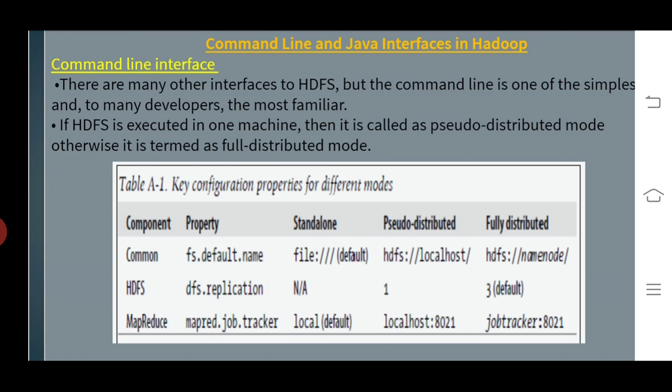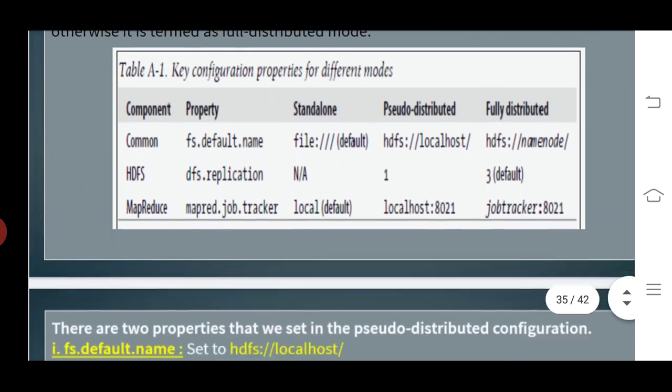Coming to basic file system operations — the system is ready to be used and we can do all of the usual file system operations, such as reading files, creating directories, moving files, deleting data, and listing directories. You can type 'hadoop fs -help' to get detailed help on every command. This is the concept of command line interface.